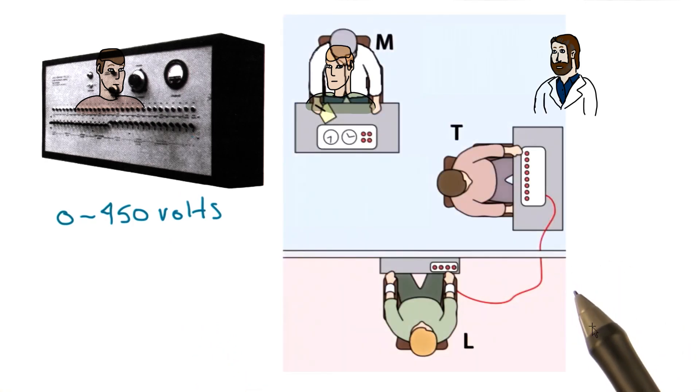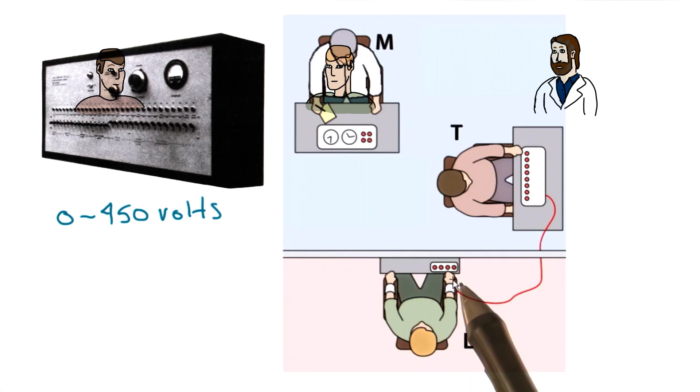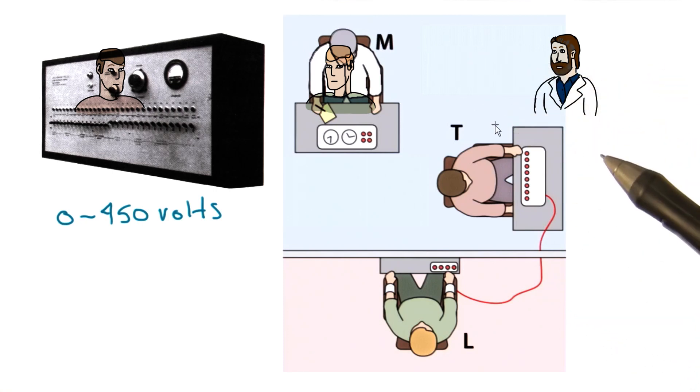So here's the experimental arrangement. Here we have the teacher, who is sitting in front of the voltage machine. And notice that the learner is in a separate room. Remember the learner is the confederate, and when the study began, he actually just left the room. All of the responses were preprogrammed. Notice, too, that Milgram was sitting near the teacher as he was observing that person.